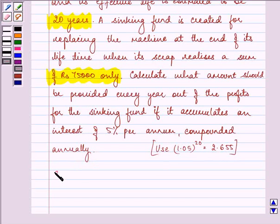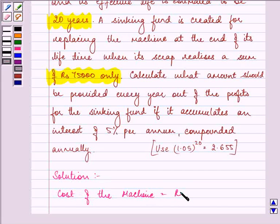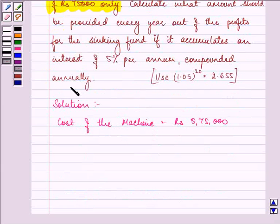So, let us write down whatever is given to us in the question first. First, we are given the cost of the machine equal to Rs. 5,75,000. Its scrap value is given to us as Rs. 75,000.